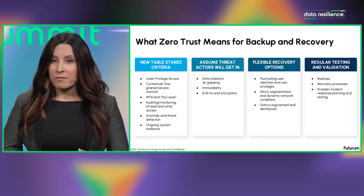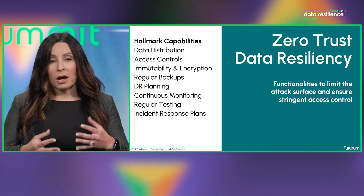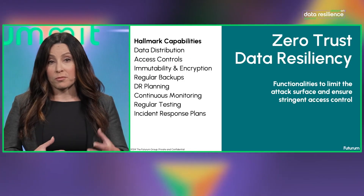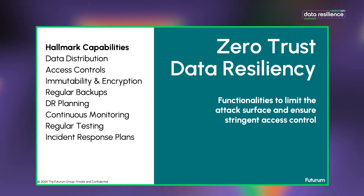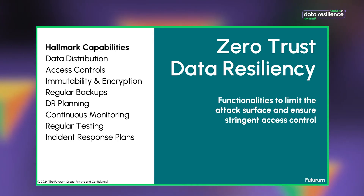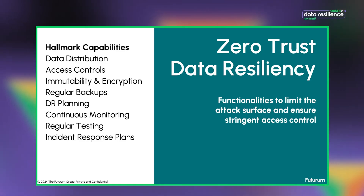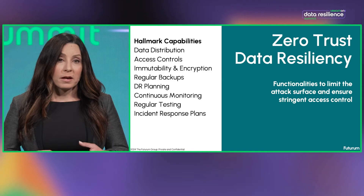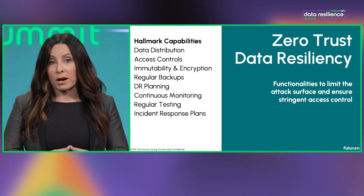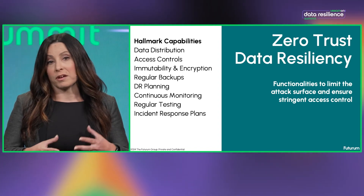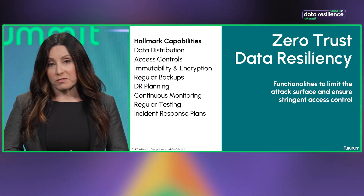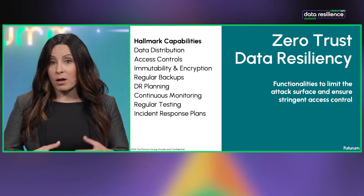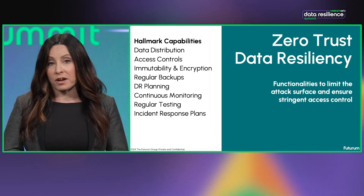What does it look like for data to be resilient with zero trust principles? Data tends to be distributed across multiple locations and systems in order to reduce the risk of a single point of failure. Granular access controls become very important to limit access to data and minimize the potential impact of a breach. Immutable storage and encryption become necessary to prevent unauthorized modification or deletion. We need regular backups and extensive disaster recovery planning and testing to ensure that data can be quickly restored in the event of a major incident. Backup and recovery environments become monitored on a regular basis for threats and anomalies to allow for earlier detection and response.